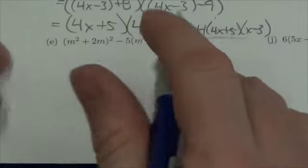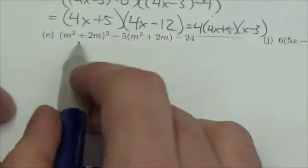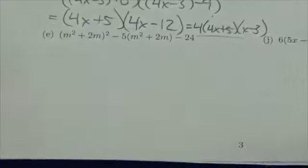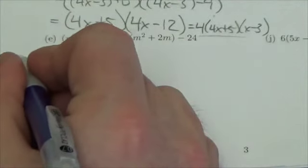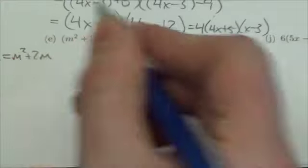Alright, I'm going to factor here 3e, and again I see these binomials in here, and I don't want to necessarily work with those. What I'm going to do here is I'm going to let x equal this m squared plus 2m.